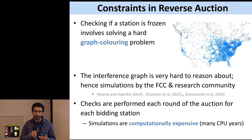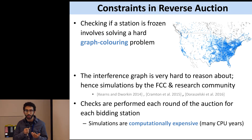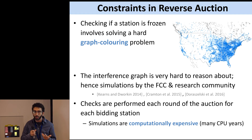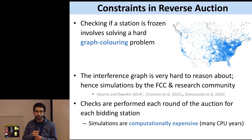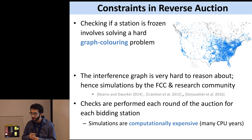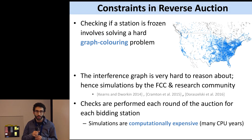Up until now I've been talking about whether stations can fit alongside other stations as if it's a knapsack problem. As mentioned in Paul's talk yesterday, it's actually much more similar to a graph coloring problem involving a complex interference graph. This graph is really hard to reason about, which is why simulations have been a tool used by the FCC and the broader research community. These checks happen every round of the auction, every time you want to lower a station's price, making the simulations very expensive.